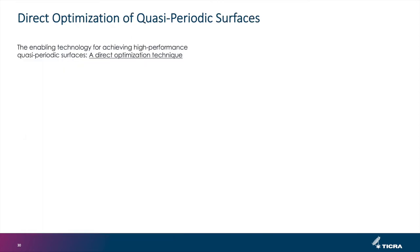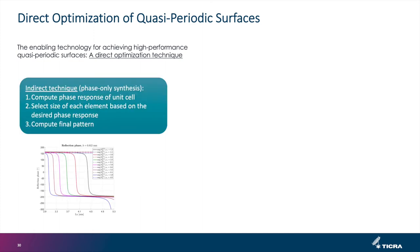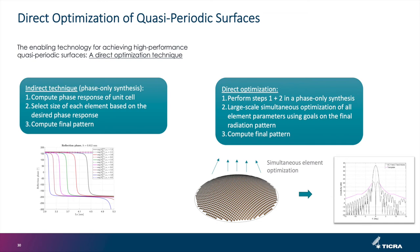For 3D objects in a 2D lattice we use higher order basis functions with a 3D periodic Green's function and MLFMM acceleration, extended to include the discontinuous Galerkin integral equation, dielectrics, and both finite and infinite dielectric regions. For direct optimization of quasi-periodic surfaces, the indirect technique — selecting element sizes based on phase response one by one — is only the first step, the initial guess. Then a large-scale optimization of all elements simultaneously is launched, potentially involving thousands of variables, yielding much better performance.